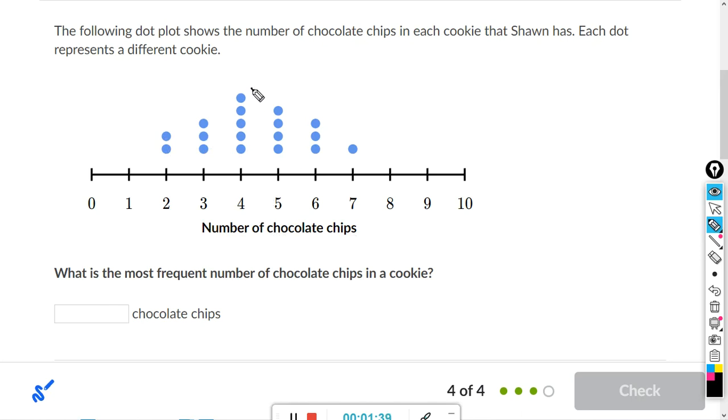So we can clearly see the number that occurred the most often is four, because it has the most number of dots. So that's going to be a four.